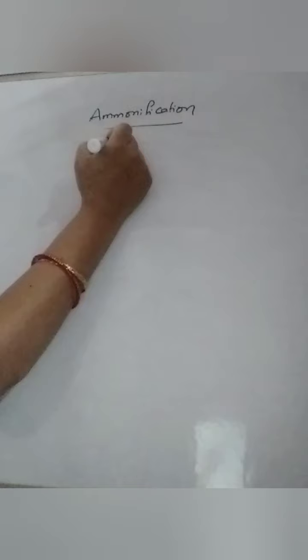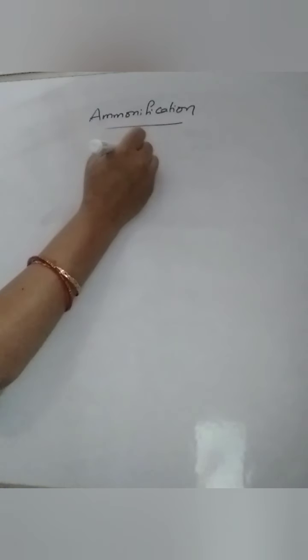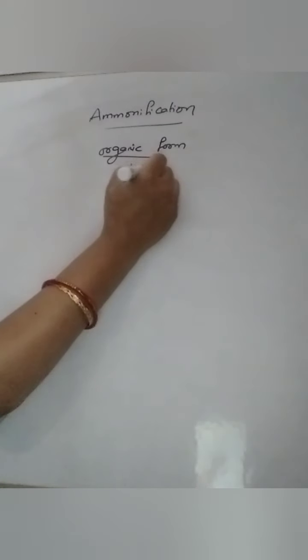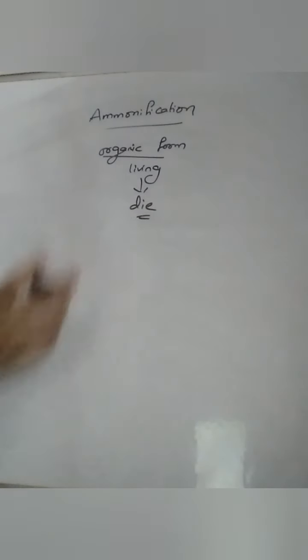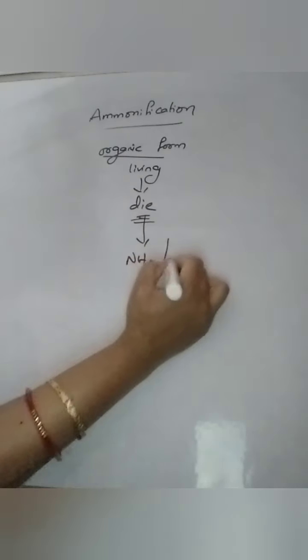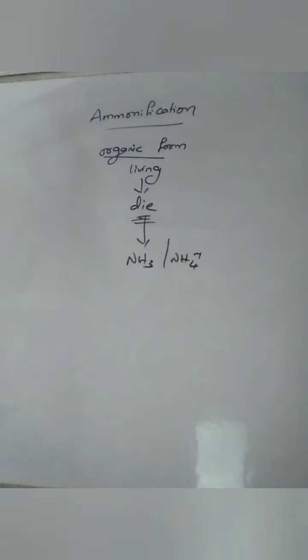Next is ammonification. After nitrogen assimilation, the nitrogen is converted into organic form inside the plants, or plants will be consumed by other heterotrophs. Whatever it is, in living organisms the nitrogen is in the form of organic compounds. When these living organisms die, they will decompose into ammonia or ammonium ion form.